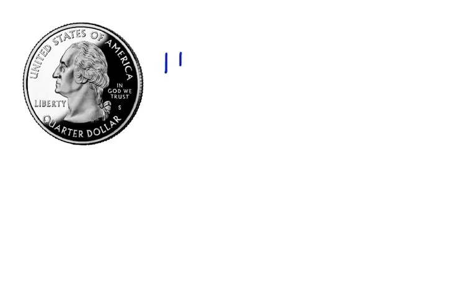When we flip a coin, there are two possible outcomes on the first flip: there's heads, or there's tails. So we can say that the first time the two girls flip the coin, it'll either be heads or tails.